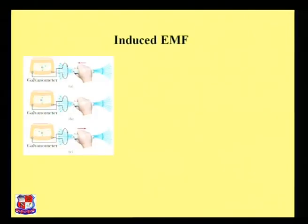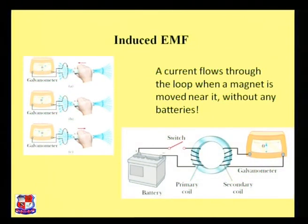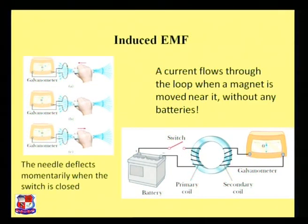Now, what is induced EMF? Here we have a galvanometer. A current flows through the loop when a magnet is moved near it without any batteries, and the needle deflects. The needle deflecting means we have a current — this current is the result of the induced EMF.